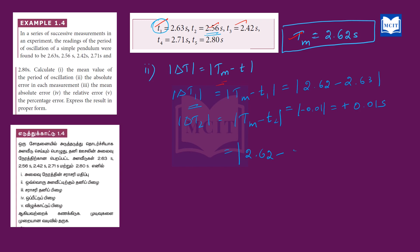We simplify each one in turn: delta t1, delta t2, delta t3, delta t4, and delta t5 — computing the absolute error for each of the five measurements individually.